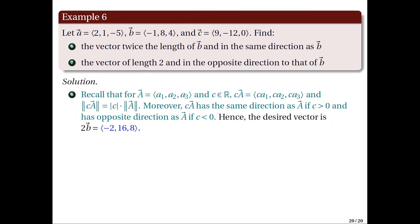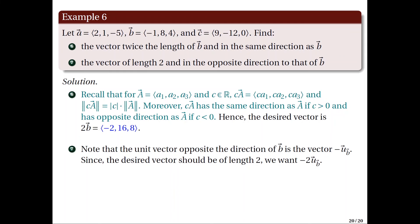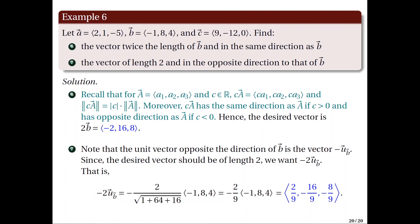For the last item, we find the vector of length 2 opposite the direction of vector B. The unit vector opposite B is −U_B, and since we want length 2, we multiply by 2: −2 · U_B = (−2/|B|) · B = (−2/9) · (−1, 8, 4), which equals (2/9, −16/9, −8/9).